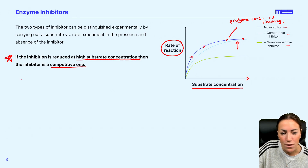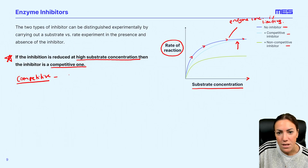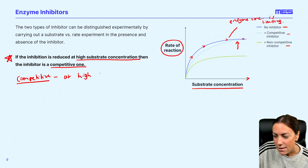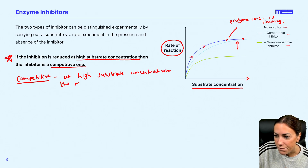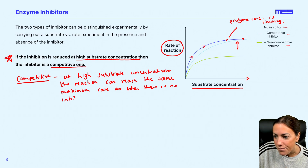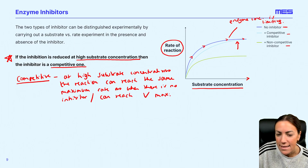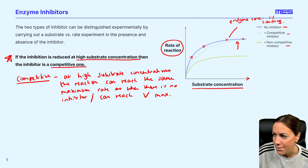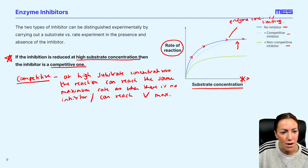So with a competitive inhibitor, at high substrate concentrations, the reaction can reach the same maximum rate as when there is no inhibitor — we call this Vmax. It can reach the maximum rate. This is because the competitive inhibitor is competing with the substrate for the active site, so if you increase the substrate concentration, what is going to happen?